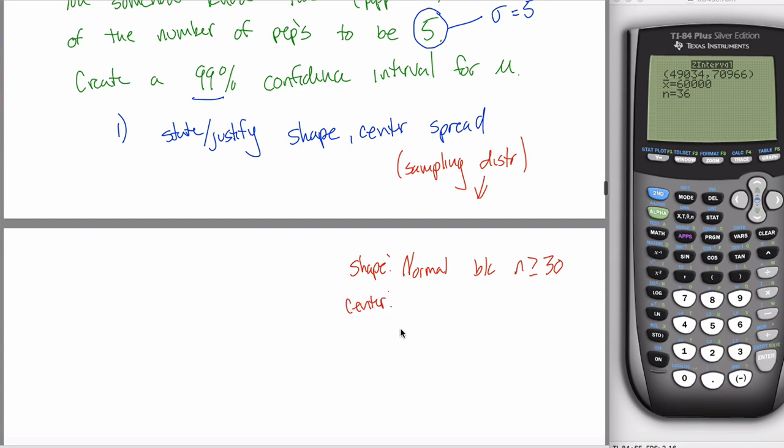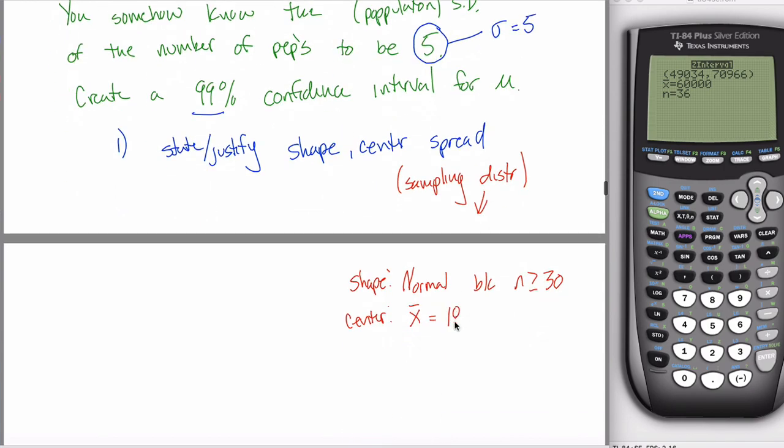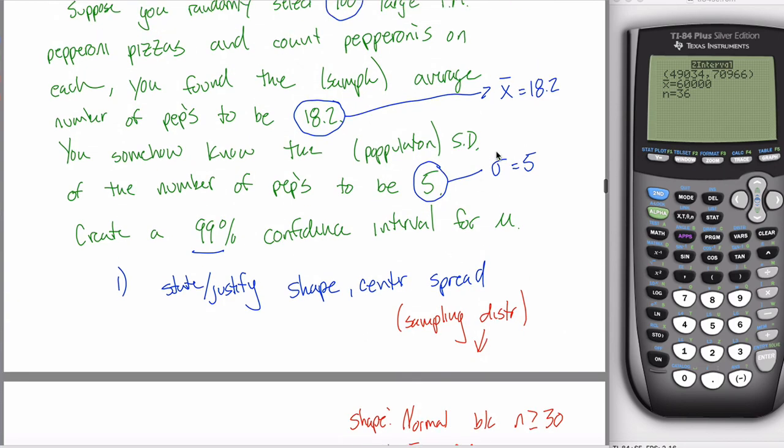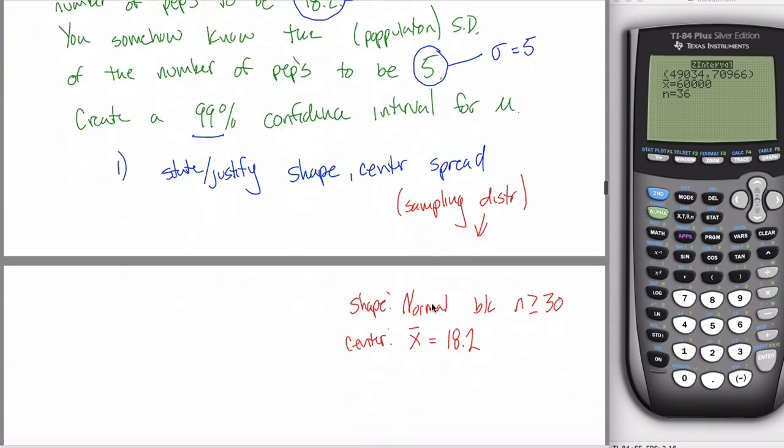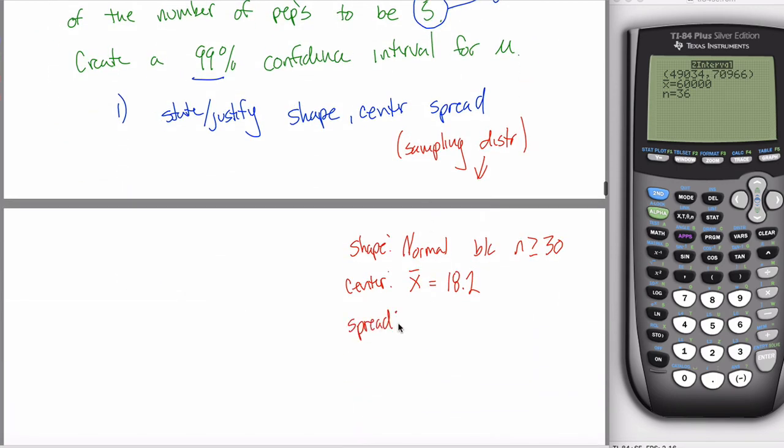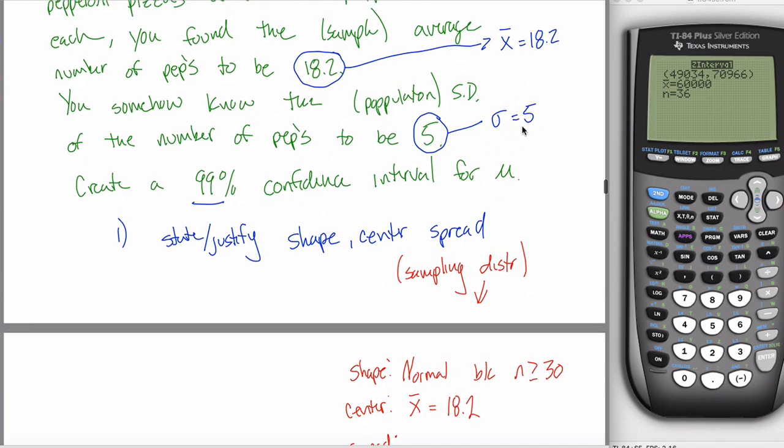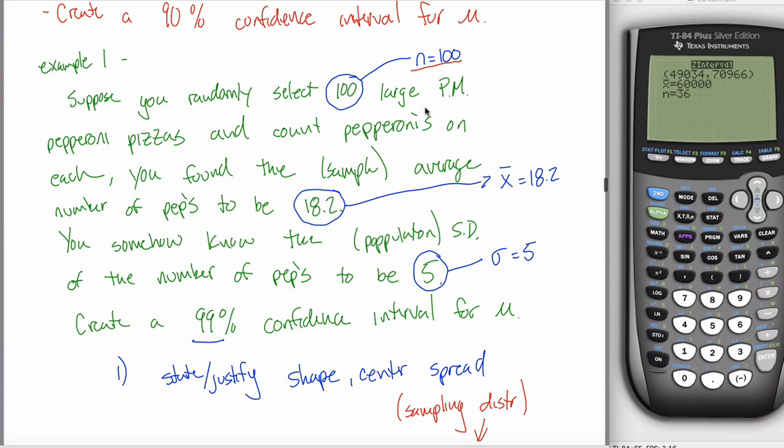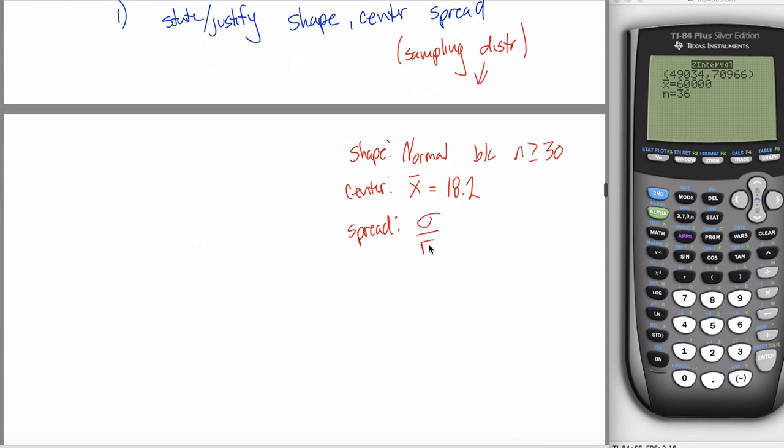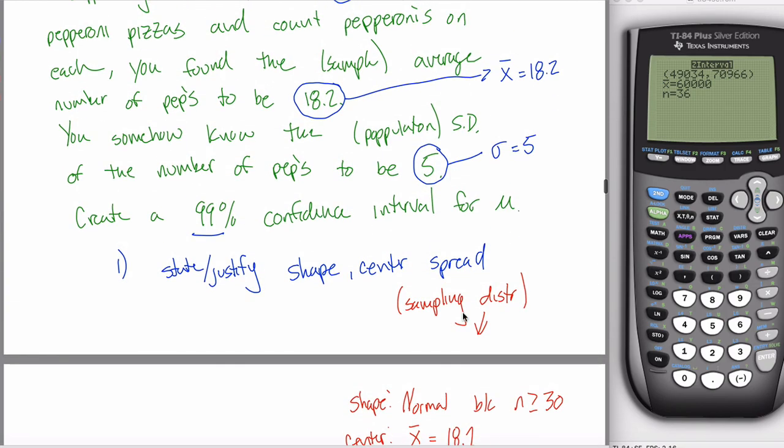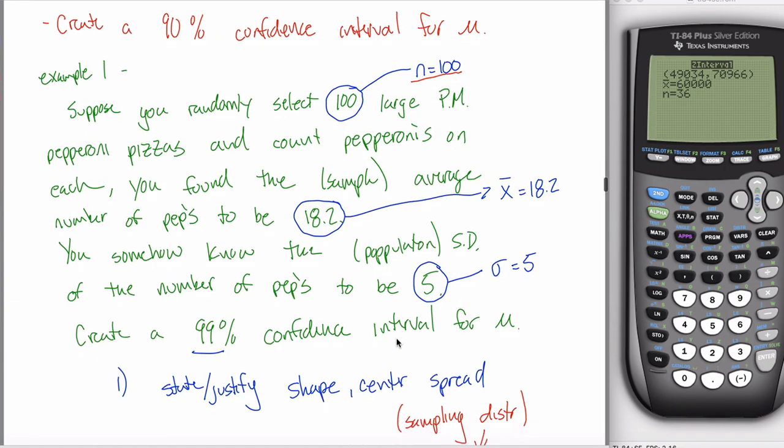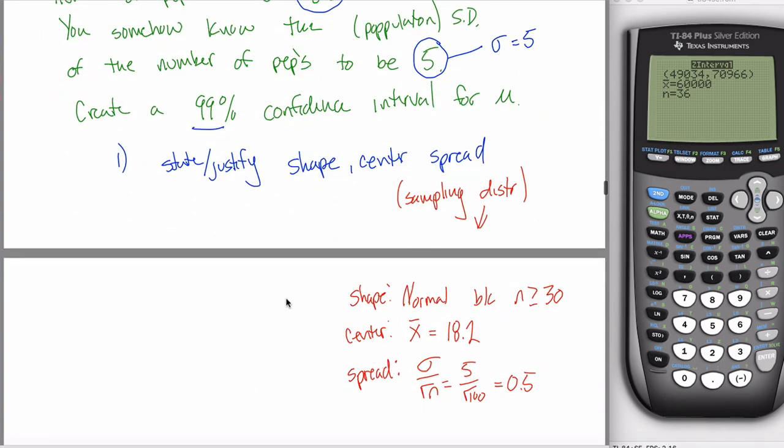So you could say it's normal, and then your justification would be because N is greater than or equal to 30. And you already stated up here it was 100. Center. The center in a confidence interval, it has a fancy name, it's called the point estimate. That's given by x bar. That's the only information given to you in the problem. And the spread. This standard deviation refers to the parent distribution, and we want the sampling distribution. So you have to take this standard deviation and divide it by the square root of N. So your spread would be sigma divided by the square root of N. In this case, 5 divided by the square root of 100.